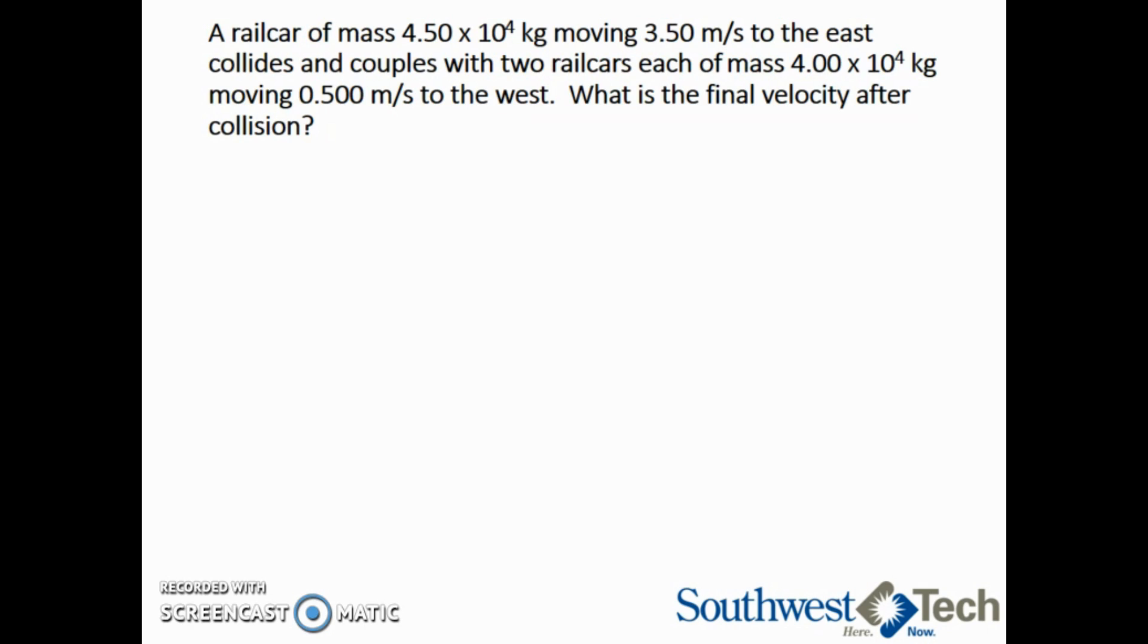A railcar of mass 4.5 times 10 to the 4 kilograms moving 3.5 meters per second to the east collides and couples with two railcars each of mass 4 times 10 to the 4 kilograms moving 0.5 meters per second to the west. What is the final velocity after collision?